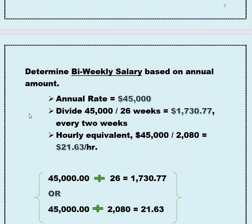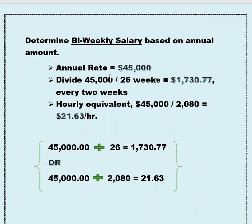To determine your bi-weekly salary based on the annual amount, we're going to use $45,000 again. You divide the $45,000 by 26 weeks, and that will give you your bi-weekly salary of $1,730.77. That's the gross amount you can expect to receive every two weeks. The hourly equivalent is $21.63 — that's not going to change for any of these cycles. You divide your $45,000 by 2,080, and that gives you your hourly equivalent of $21.63.